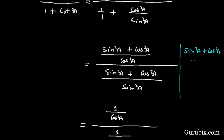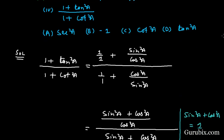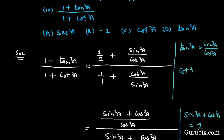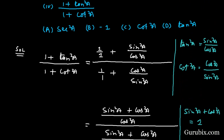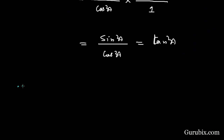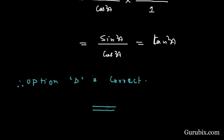The formulas applied in this question are: tan²A = sin²A / cos²A, and cot²A = cos²A / sin²A. We observed that option D is correct. Therefore, option D is correct. This is the solution of the question. Thank you.